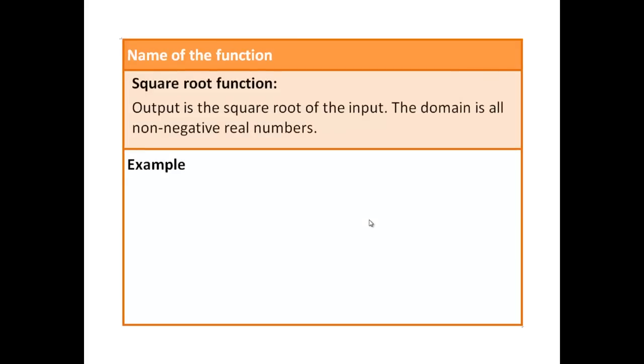All right, square root function. The output is the square root of the input. So the domain would be all non-negative real numbers. Because if you have a negative real number, it's going to be imaginary numbers. So if you want a real valued function, you have to restrict the input to all positive, zero and positive real numbers. That's why we say non-negative, because zero is allowed.